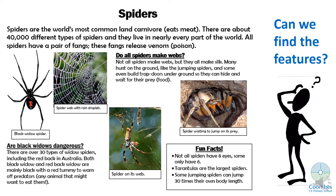Spiders are the world's most common land carnivore — that means to eat meat. There are about 40,000 different types of spiders and they live in nearly every part of the world. All spiders have a pair of fangs. These fangs release venom, which is another word for poison. Not all spiders make webs, but they all make silk. Many hunt on the ground like the jumping spiders, and some even build trapdoors underground so they can hide and wait for their prey — food.